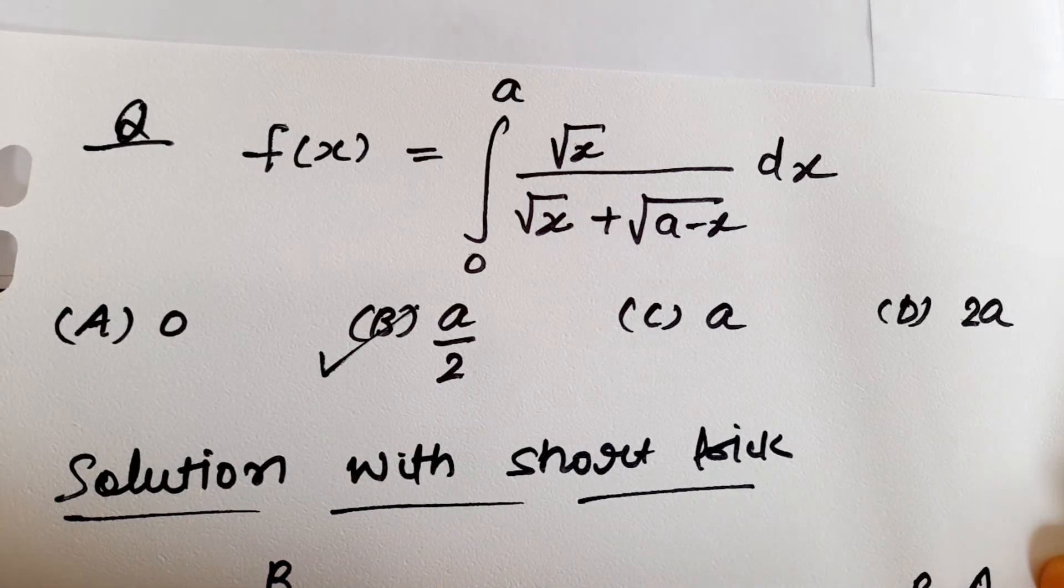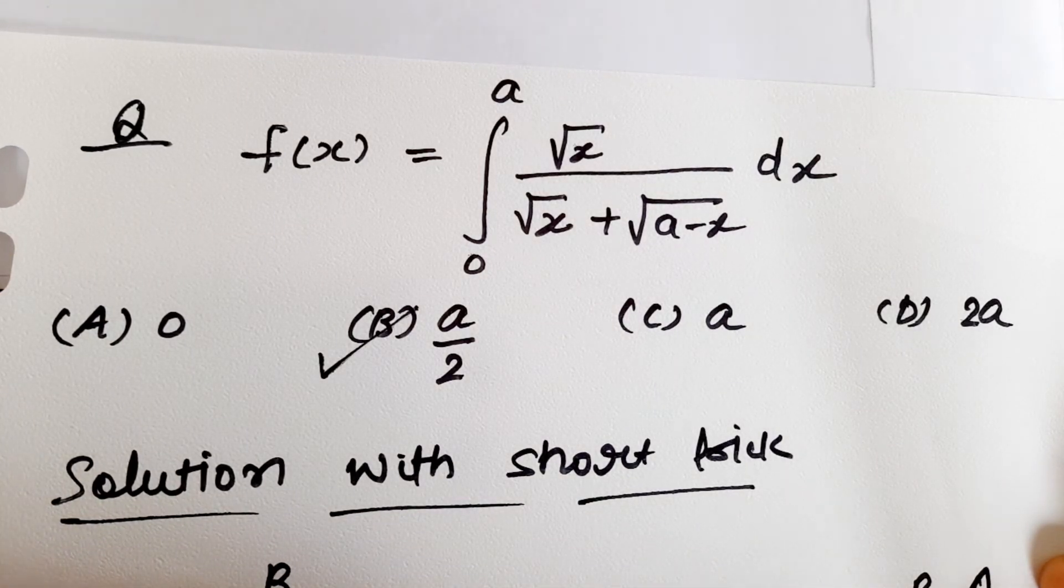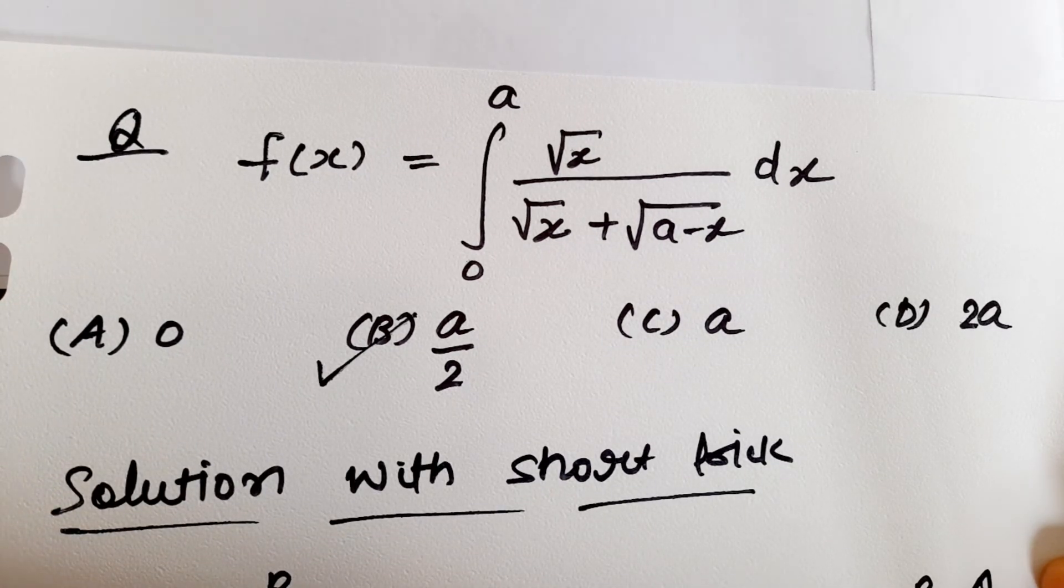So now we will solve it with the help of the short trick. If you solve it with the long trick, then what can you do? You have f of x, you have f of a minus x, and you have a relation to solve it. But with multiple choice questions, you can use the short trick.